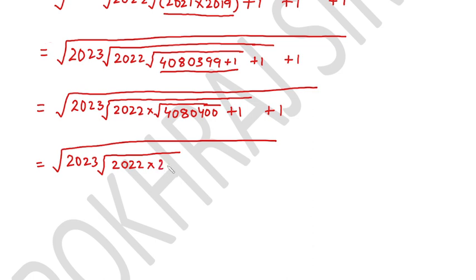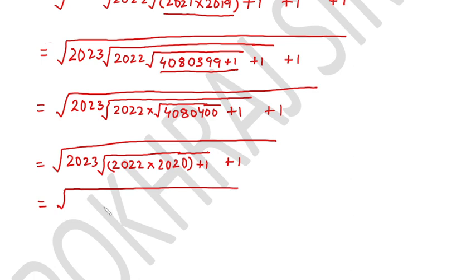The square root of 4,080,400 is 2020, so we now have √2023 × √(2022 × 2020 + 1) + 1. Multiplying 2022 × 2020 gives 4,084,440. Adding 1 gives 4,084,441, with the outer plus 1 still remaining.